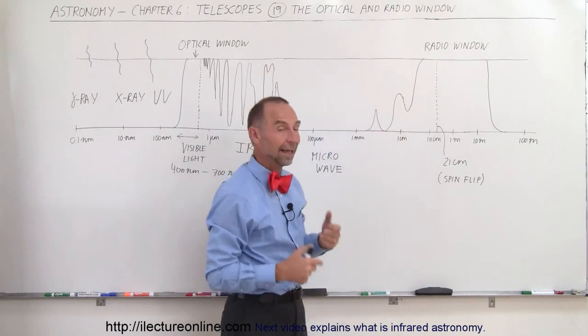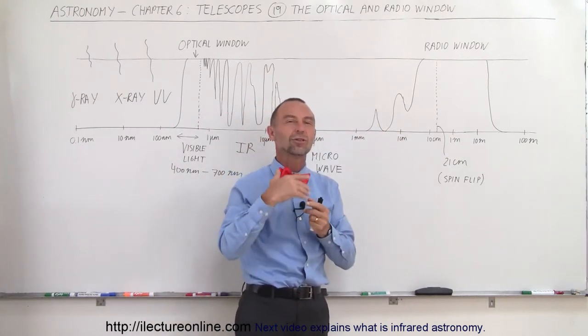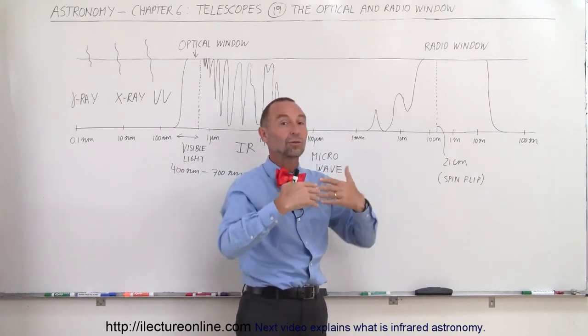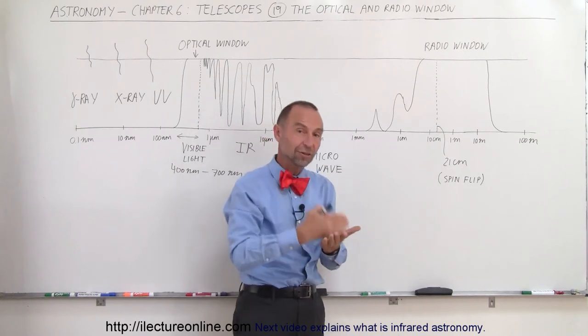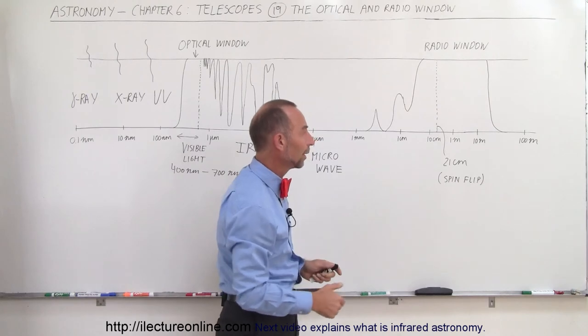And we can clearly see that. And also, that 21-centimeter spin-flip radiation also makes it through the dust and gas from nebulas. We can see through nebulae that otherwise would block all the other radiation, visible and infrared radiation.